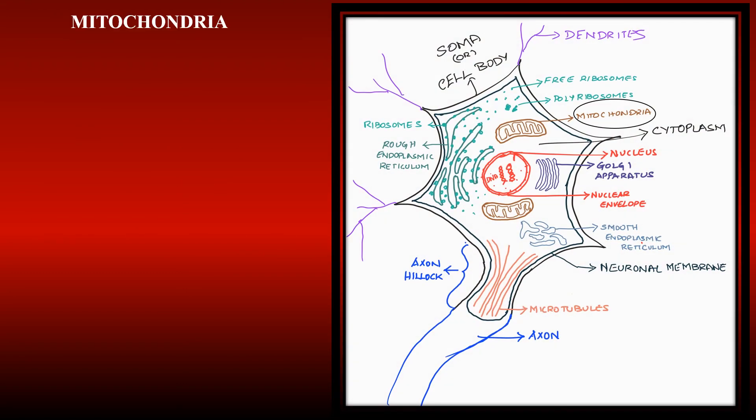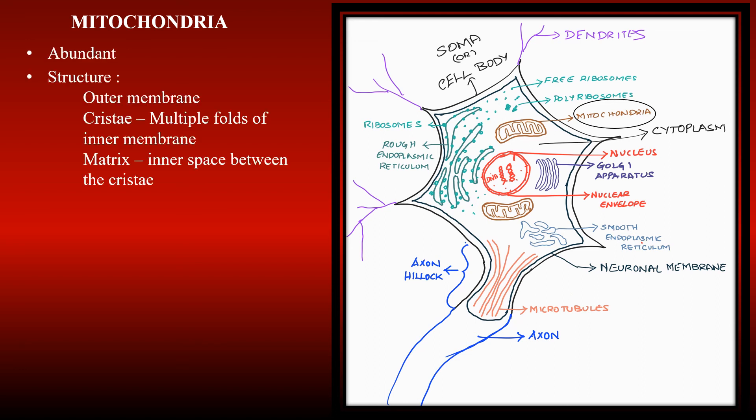Then there is the mitochondria. They are approximately one micrometer long and are abundant in neurons. A mitochondria is made of an outer membrane, then cristae which are multiple folds of inner membrane, and the matrix which is the inner space between the cristae.